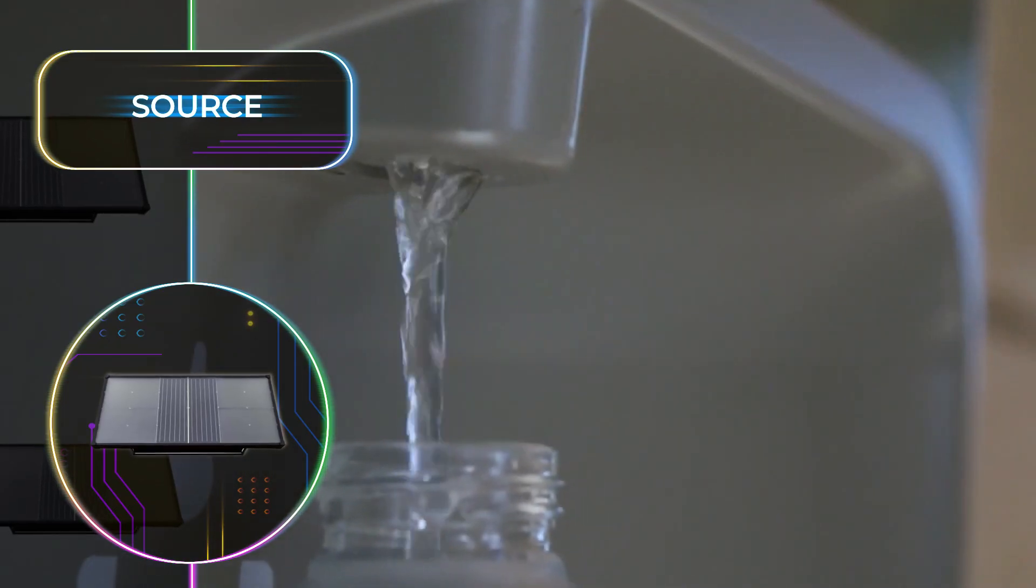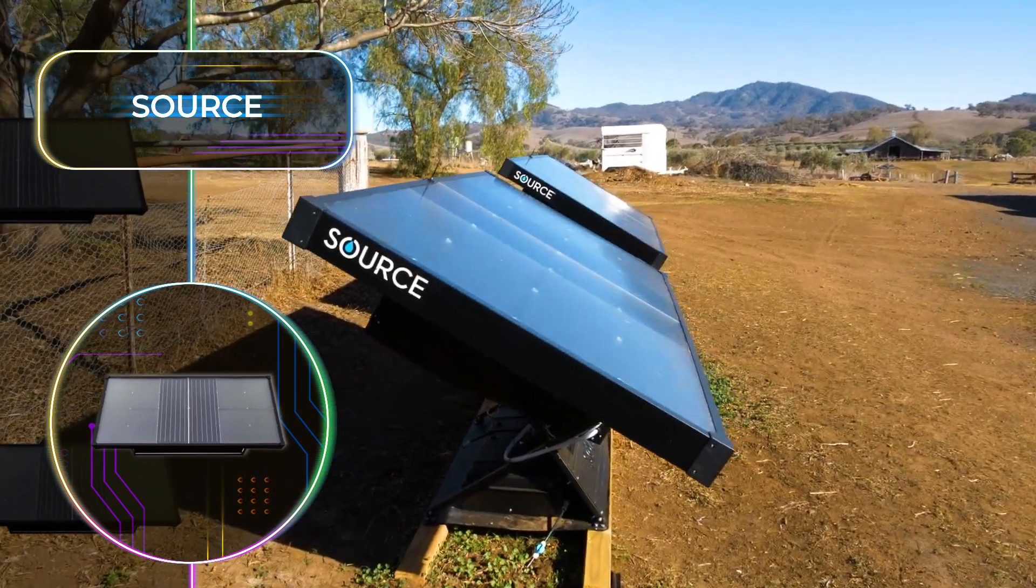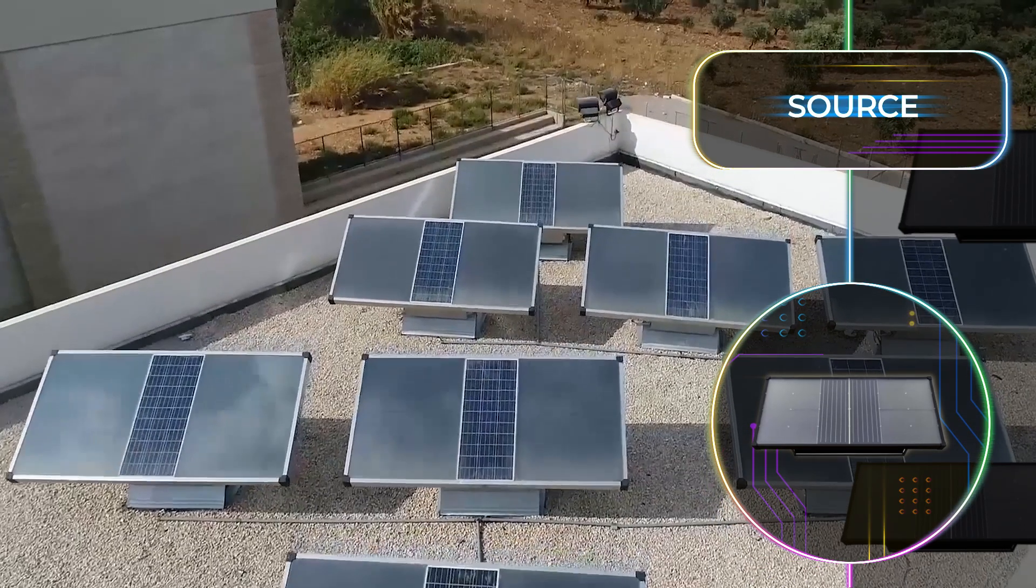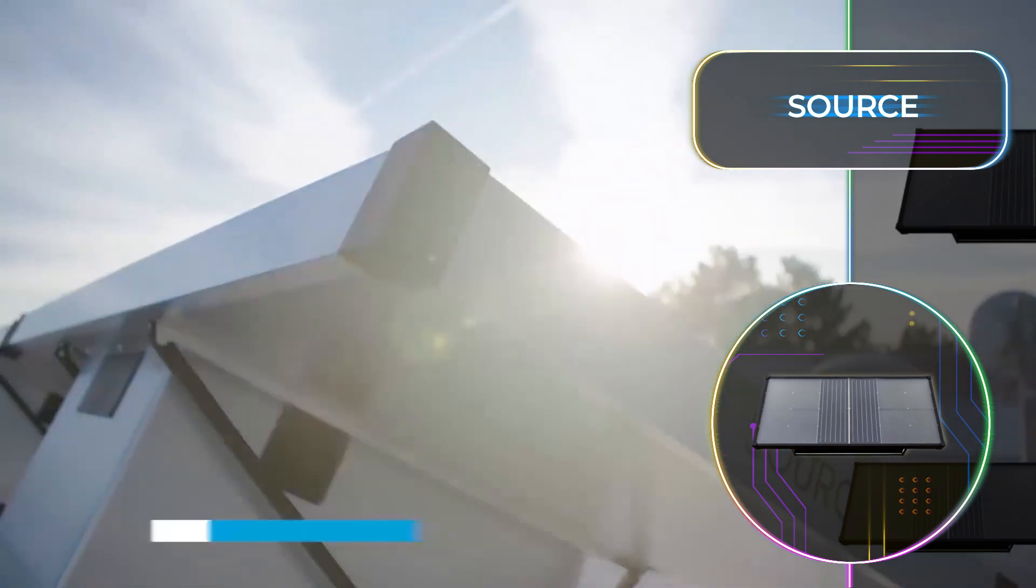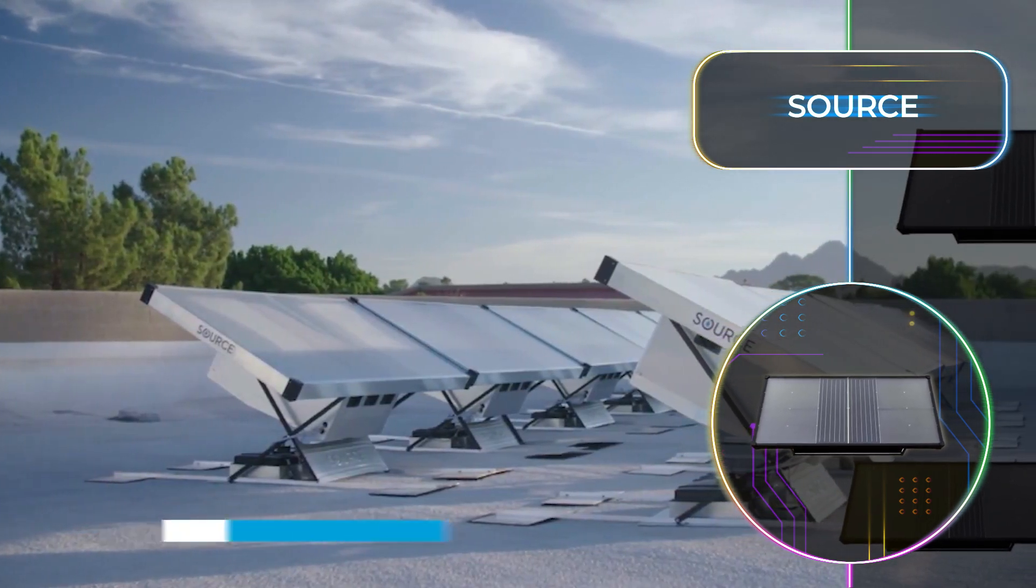Source has stepped up with an inventive solution to this crisis. This self-sufficient machine has panels designed to extract water from the atmosphere through built-in fans that pull in air. This air is then directed through a special material that captures any water vapor. As the material absorbs the vapor, it becomes moist and creates liquid. This liquid is then gathered, fortified with minerals, and purified.